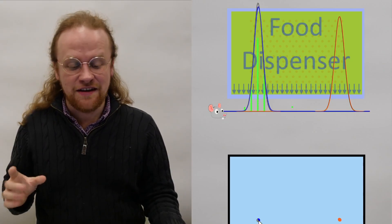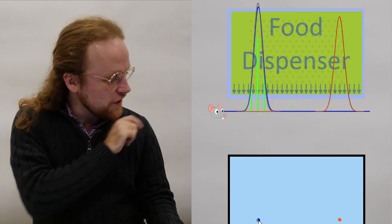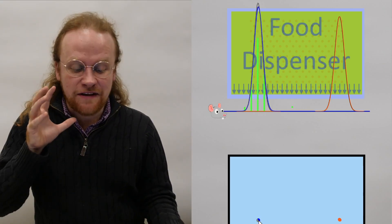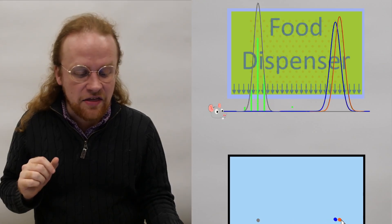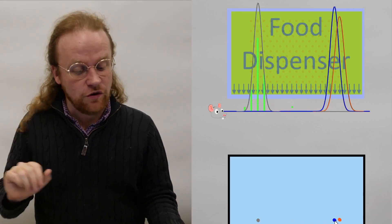What's going to happen to its beliefs in between? First let me say an answer that very much is not correct. It is not going to be the case, looking at belief space, that the rat's beliefs simply move from one point to the other in a straight line. That is not going to happen.